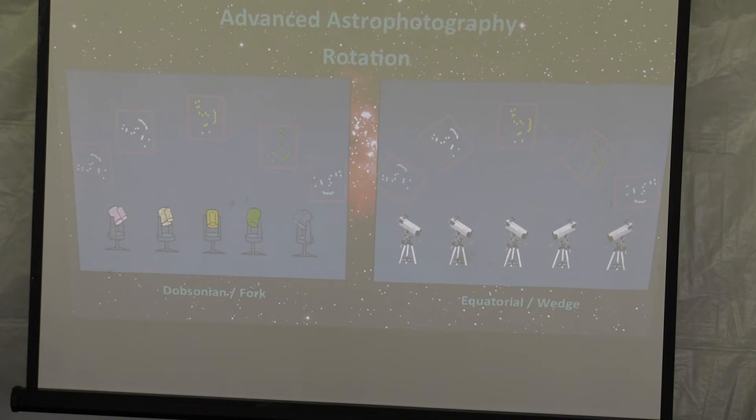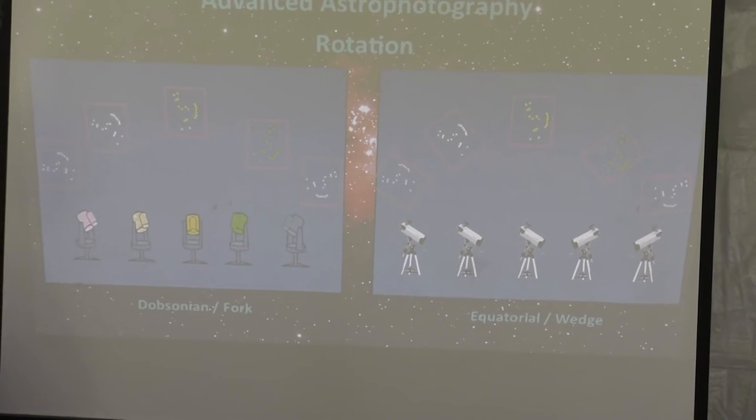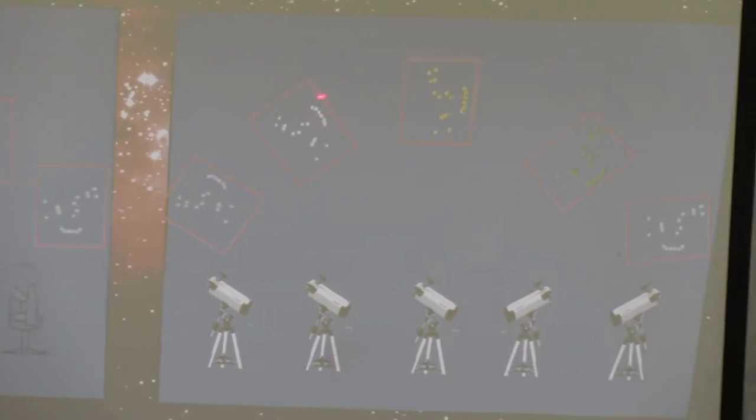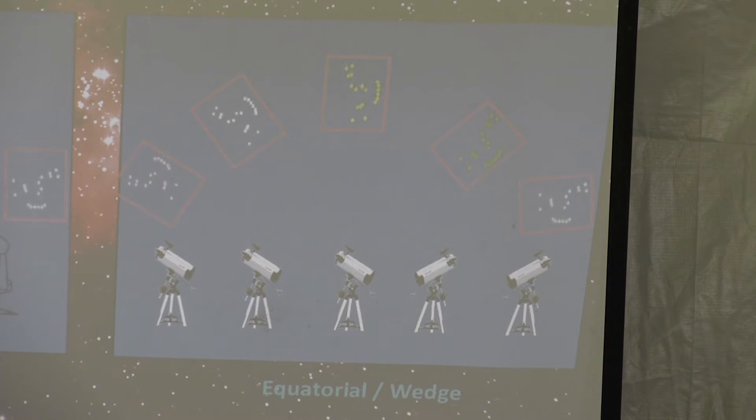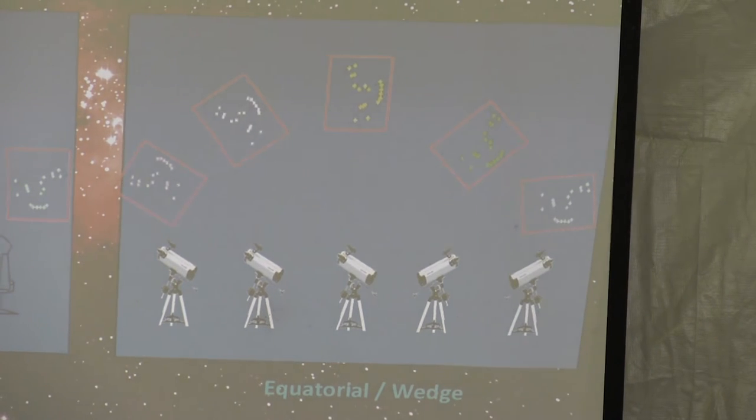Why do I need an equatorial versus a Dobsonian or a fork? So here's the real reason. There's no rotation in a Dobsonian. If you see, it's now pointing in this direction, now it's pointing here, now it's pointing to the side, now it's pointing to the lower right-hand corner because that's the way that these things move across the sky. If you took a picture with a Dobsonian with a long exposure, you're going to get one big smear. You've got to get an equatorial mount that actually rotates.